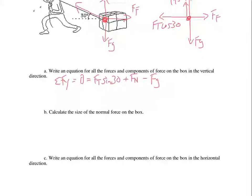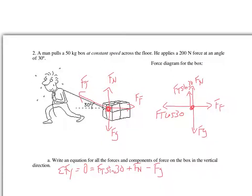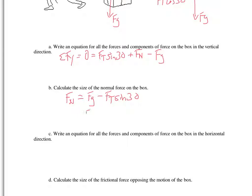To calculate the normal force on the box, I solve: Fn equals Fg minus Ft sine 30. Fg is 50 kilograms, so that's 500 newtons, minus Ft sine 30, which is 200 times sine 30. The sine of 30 is one half, so it's 500 minus 100. Therefore Fn equals 400 newtons.